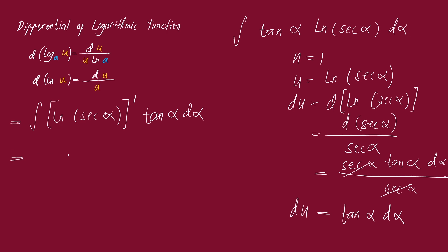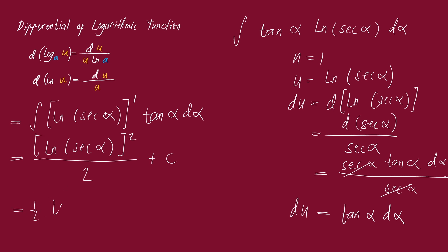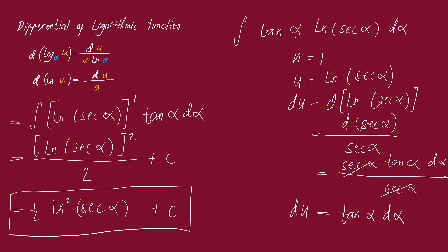This gives us: u = ln(sec α) raised to n plus one, where n = 1 plus 1 = 2, all over 2, plus c. Simplifying, this is one-half ln raised to 2 of secant alpha, plus c. This is our final answer for the integral of tangent alpha times ln(sec α) dα.